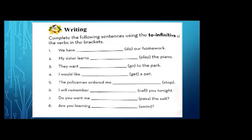Number two: my sister learns — blank — the piano. The verb 'play' is in the bracket, so we put 'to play.' My sister learns to play the piano. Number three: they want — blank — go to the park. We write 'to go.' They want to go to the park.